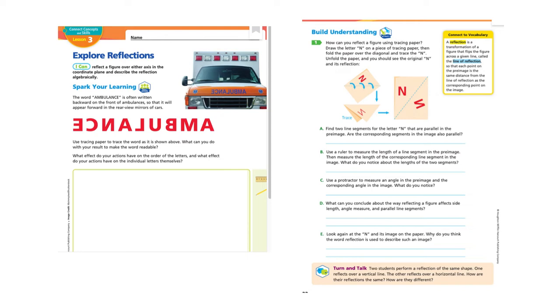What can you conclude about the way reflecting a figure affects side length, angle measure, and parallel line segments? And then E: Look at the N and its image on the paper. Why do you think the word reflection is used to describe such an image? Think about all those things, pause the video, and then we'll move forward. Answer all the questions, talk about it, and then go ahead and go to the next section.